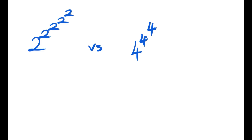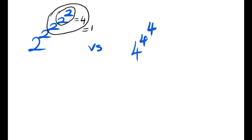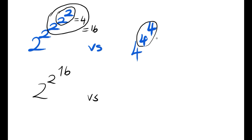Now, in exponential towers, we start from the top. So this is equal to 2 squared, which is equal to 4. Then 2 to the power of 4 is equal to 16. So we have 2 to the power of 2 to the power of 16. On this part, we have 4 to the power of 4, which is 256. So we have 4 to the power of 256.